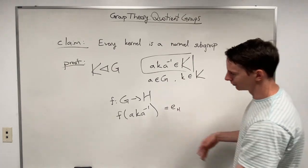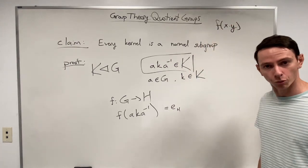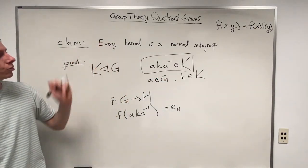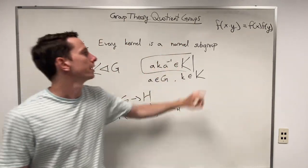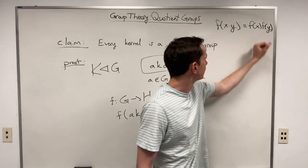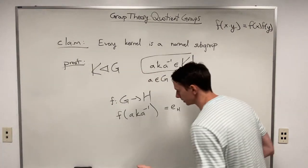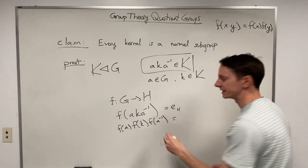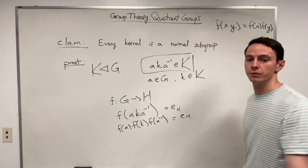Using the fundamental property of homomorphisms — that F(x·y) = F(x)·F(y), which generalizes to any number of inputs — we can rewrite F(aKa⁻¹) as F(a)·F(k)·F(a⁻¹). We'd like to show this equals the identity element e_H in the codomain.